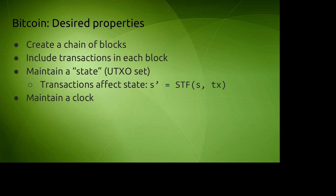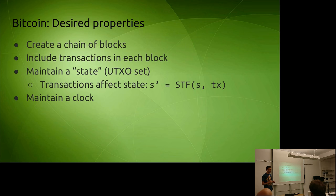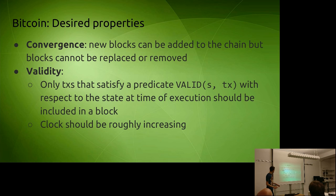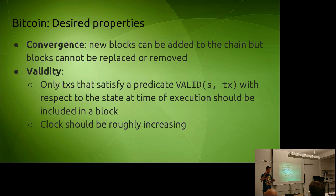One smaller functionality that Bitcoin has, which is also technologically important, is that the Bitcoin blockchain maintains a clock. Bitcoin blocks contain timestamps, and those timestamps are ideally supposed to roughly reflect reality. Here are some ways of thinking about what a well-performing Bitcoin blockchain looks like. First, we have a property of convergence: ideal total 100% convergence means new blocks can get added to the chain but blocks can never get removed or replaced — you never have reorgs, you never have 51% attacks. Every block that comes onto the chain stays in that exact same place forever.